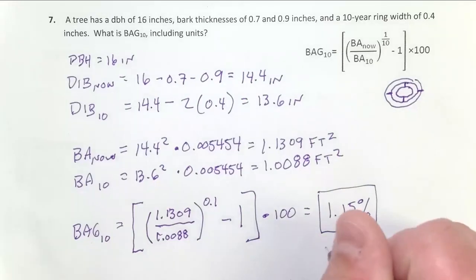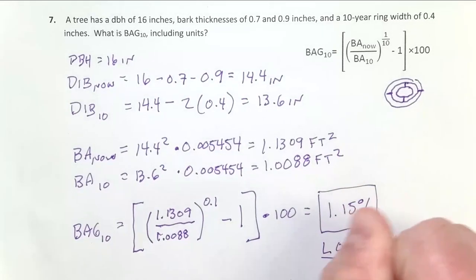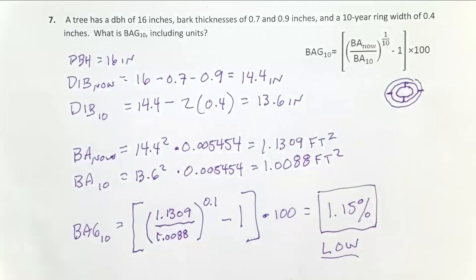Now this 1.15%, that is low, which means the interpretation of this data is our tree hasn't been growing too much over the last 10 years. If it is representative of our forest, it suggests it's time to thin, it's time to clear cut, it's time to do a seed tree or some other method of regeneration. And that's a 10-year basal area growth rate calculation.